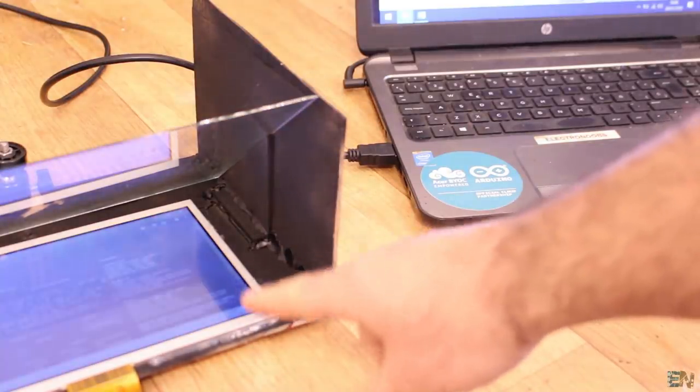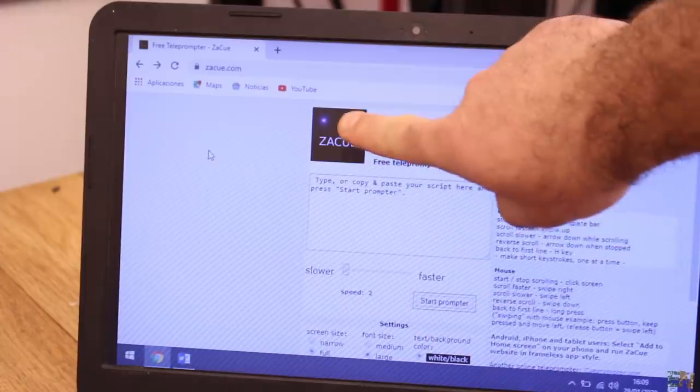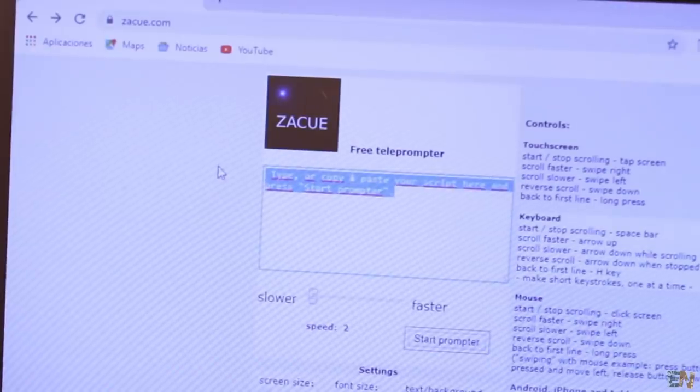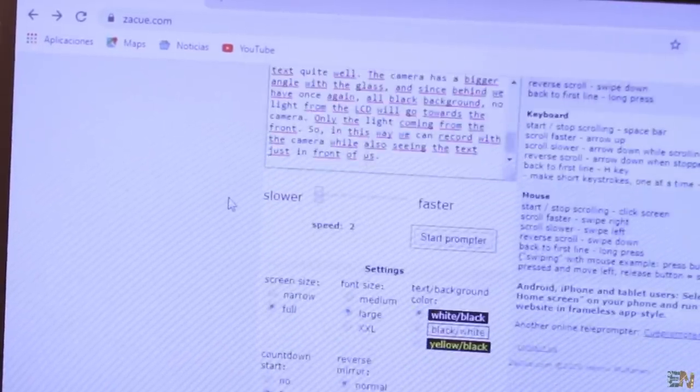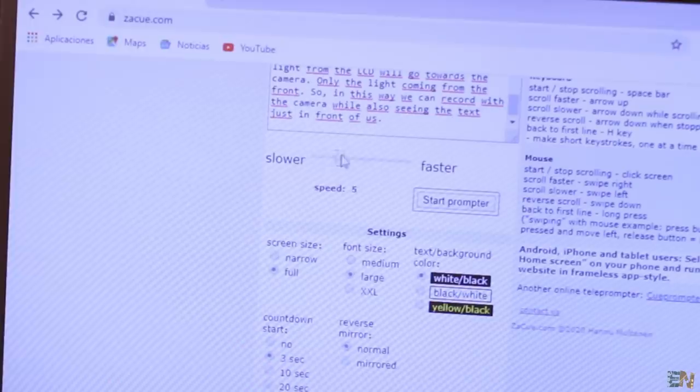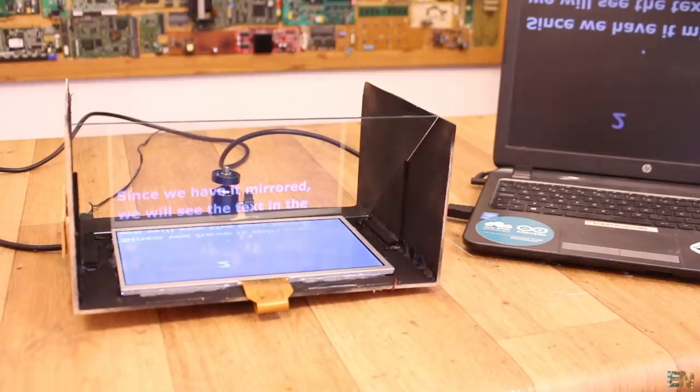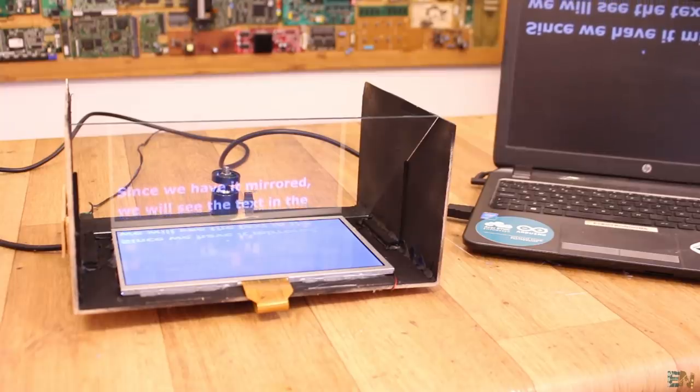Now open your internet explorer and go to cueprompter.com or any other free prompter website. All you have to do is to place your text here, you have to select the font size, also the speed, the background color to black and the mirror settings. Then you have to press prompt and the text will start scrolling.